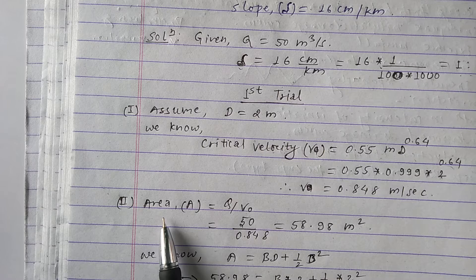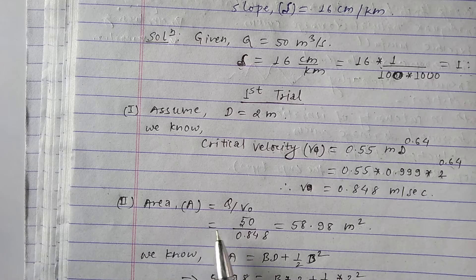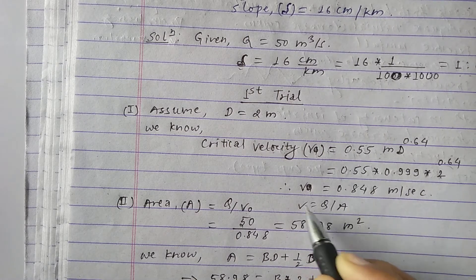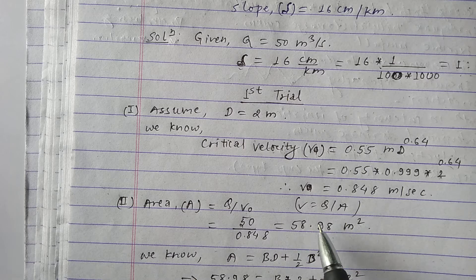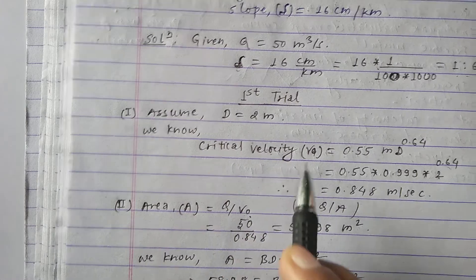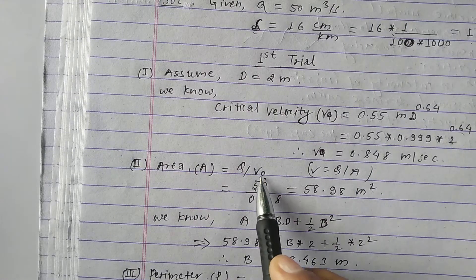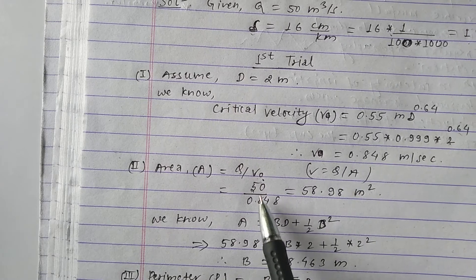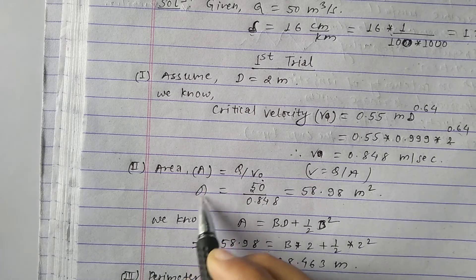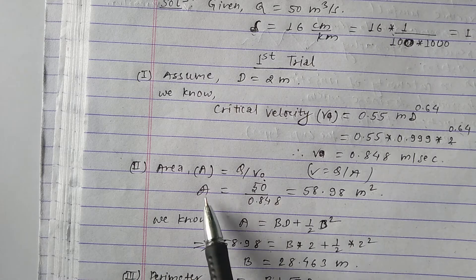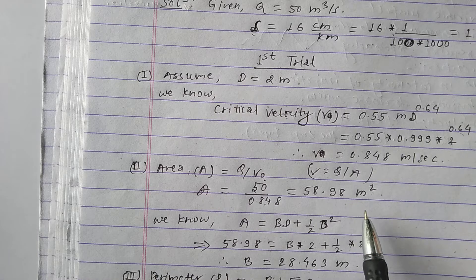In the second step, we calculate the area. We know that velocity = Q / A, so A = Q / V₀. The value of Q is 50 m³/s and V₀ = 0.848 m/s. Substituting these values, we get the area A = 58.98 m².